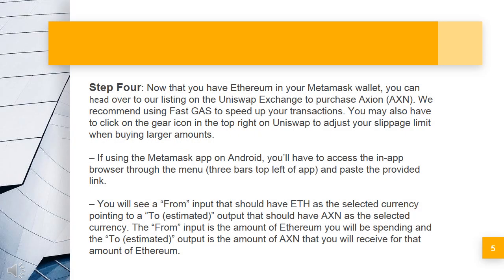Step 4: Now that you have Ethereum in your Metamask wallet, you can head over to our listing on the Uniswap exchange to purchase Axion. We recommend using FastGas to speed up your transactions. You may also have to click on the gear icon in the top right on Uniswap to adjust your slippage limit when buying larger amounts. If using the Metamask app on Android, you'll have to access the in-app browser through the menu — three bars, top left of the app — and paste the provided link.